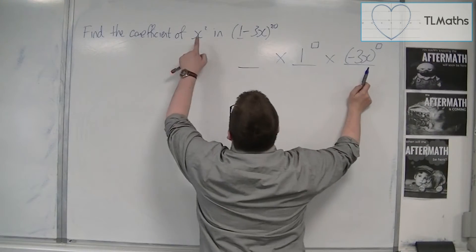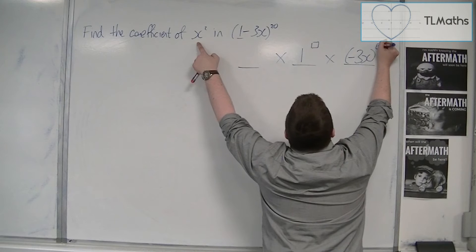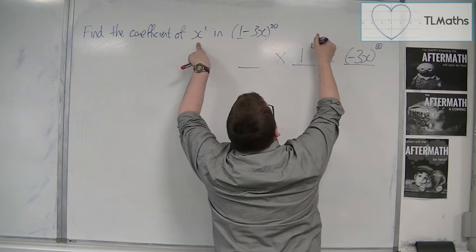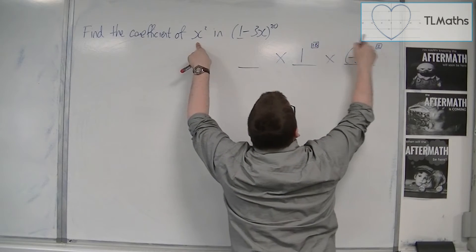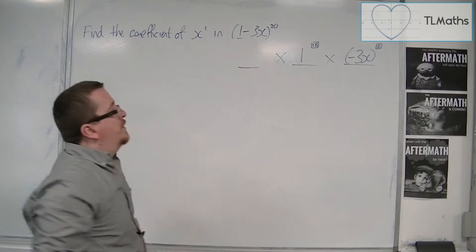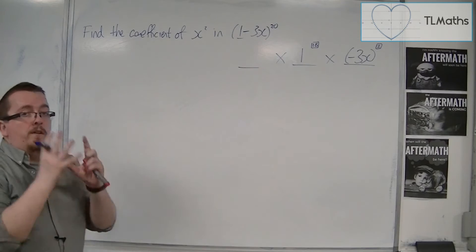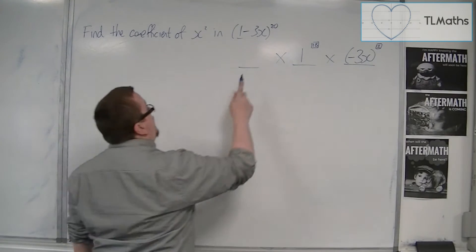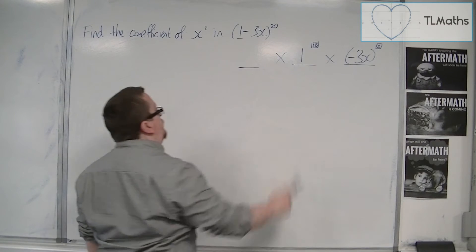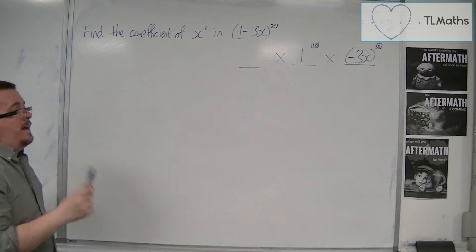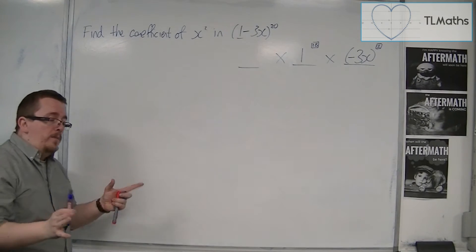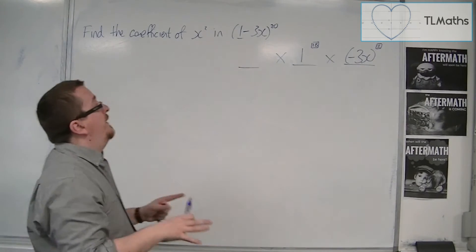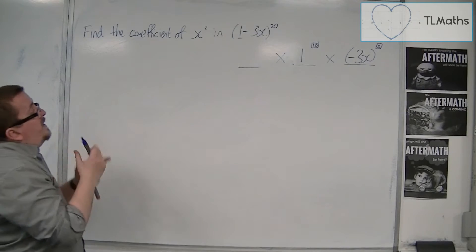We need x squared, so this power has to be a 2. And if that's a 2, then the other part has to be an 18 in order to add up to 20. So we now have the middle and the last section — we just need the first part. That comes from Pascal's triangle, but we can't draw out Pascal's triangle to the 20th row, so what are we going to do?